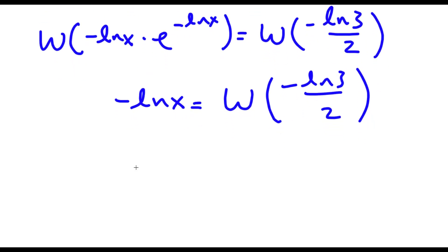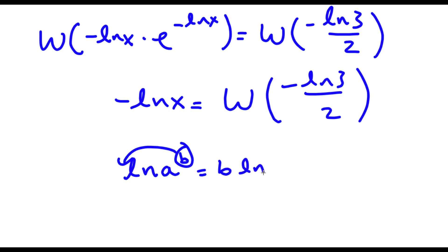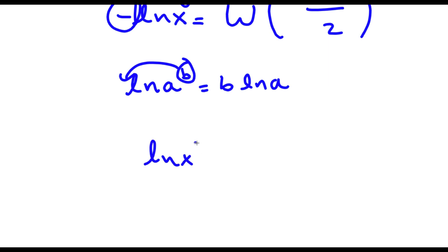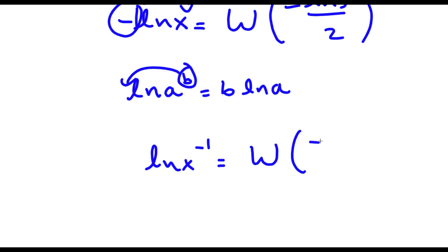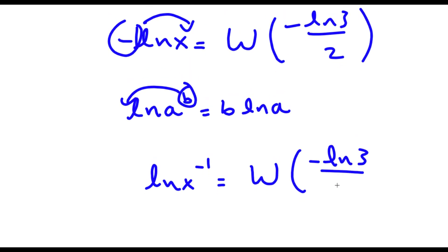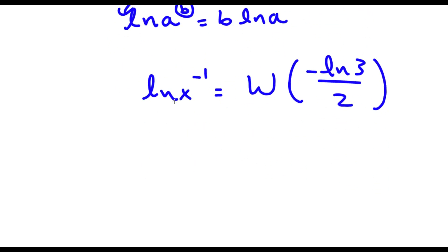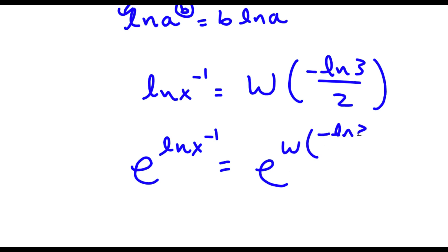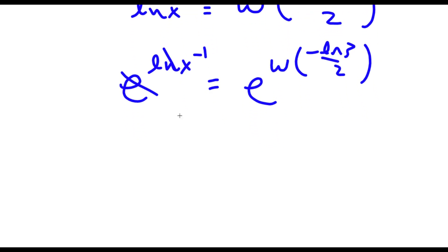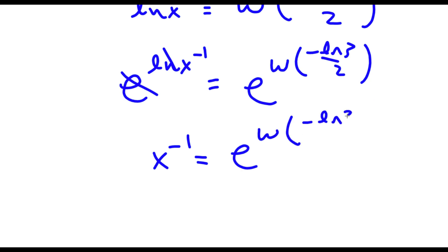Remember the property that ln a to the power of b is equal to b times ln a. I'm going to reverse this property — I have negative 1 times ln x and I'm going to move this negative 1 back as an exponent. So now I have ln x to the power of negative 1 is equal to W of negative ln 3 over 2. Now I'm going to take e to the power of both sides. So I have e to the power of ln x to the power of negative 1 is equal to e to the power of W of negative ln 3 over 2. Since e and ln cancel out, I'll be left with x to the power of negative 1 is equal to e to the power of W of negative ln 3 over 2.